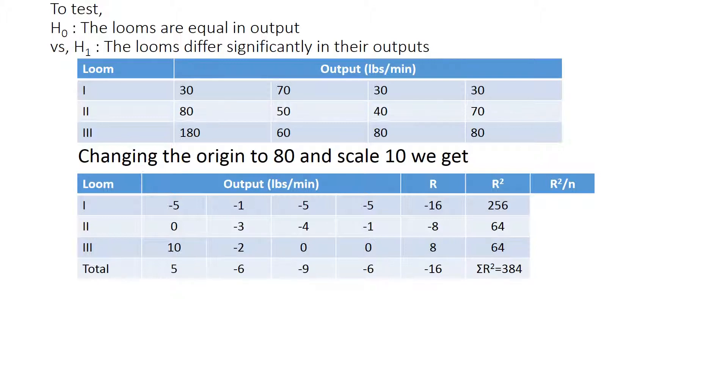R squared by N is also important. Consider all values. R squared: first row is 256, and how many terms do we have? Four times. So 256 by 4 is 64, and 64 by 4 is 16, and again 64 by 4 is 16. So the total sum of R squared by N is 96. Because we have four terms in each row, we could have directly done sum of R squared by 4, which is 384 by 4, and we get 96. Because we have equal values of N, we have equal value in each row.